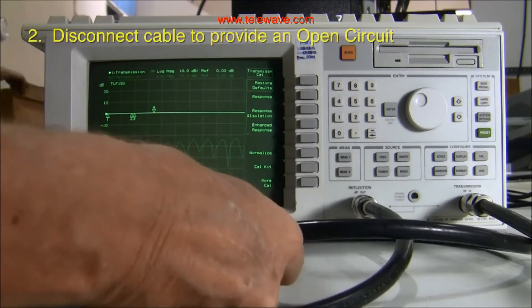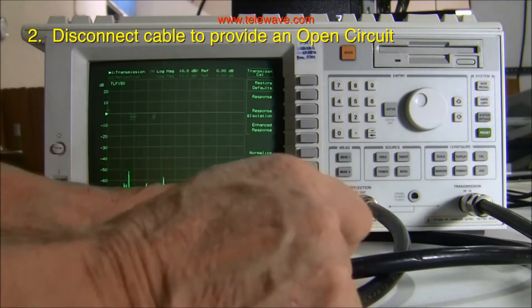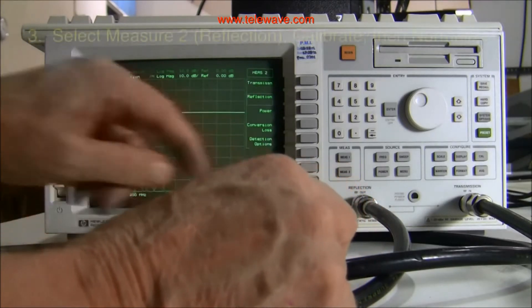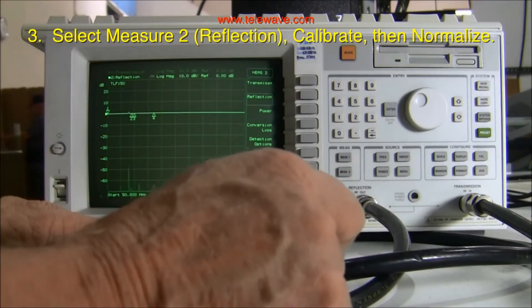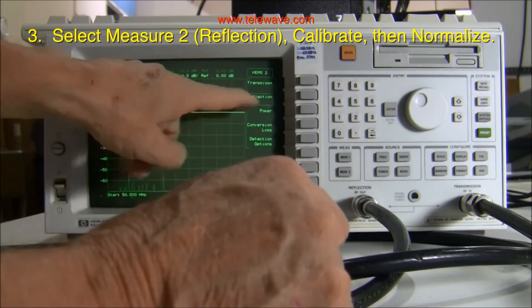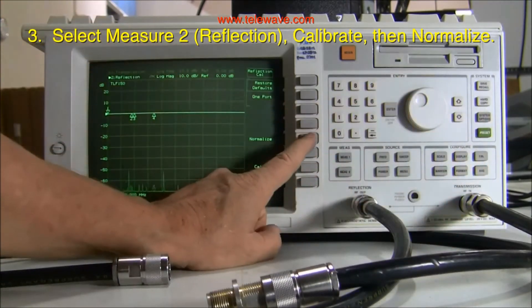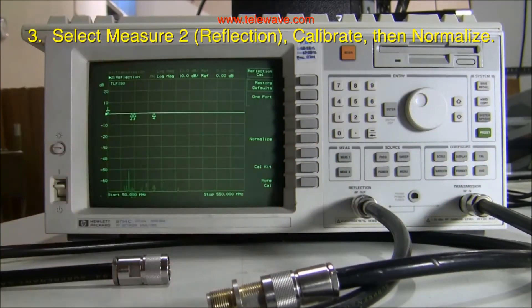Then I unscrew the two cables from each other and hit measure 2. Then I go to reflection, which puts me on reflection. And then we hit calibrate again. Now the unit is ready to test.